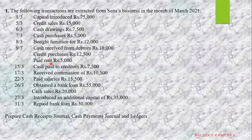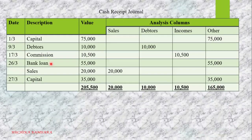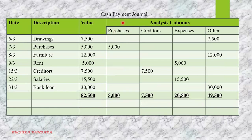Here is a question, but before that I will show you the format of the cash receipt journal. This is a simple cash receipt journal without discount and without VAT. The columns are: date, description, value, and four analysis columns — sales, debtors, incomes, and other. Just the same way, we make the payment journal, but instead of sales we write purchases, and instead of debtors we write creditors, expenses, and other.